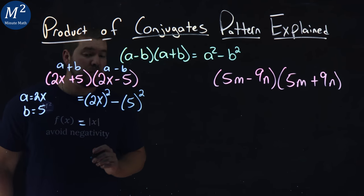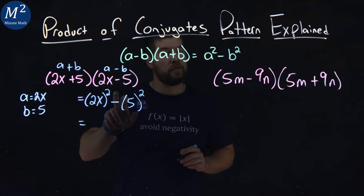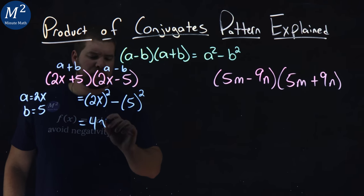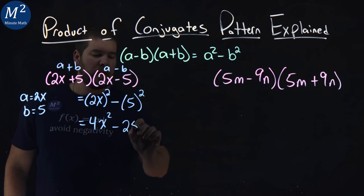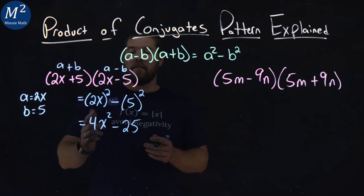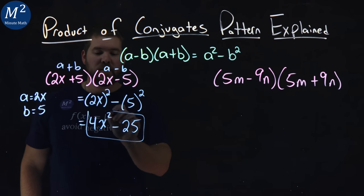And from there, we need to simplify. 2x all squared: 2 squared is 4, and x squared is x squared, minus 5 squared, 25. So using our product of conjugants pattern, we get 4x squared minus 25.